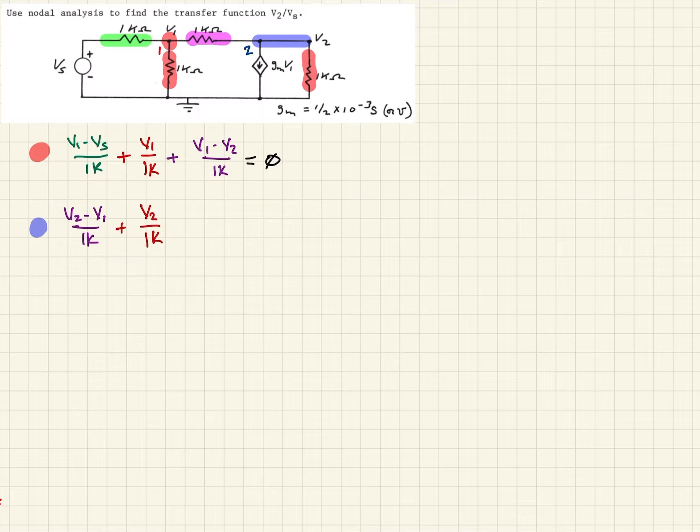Finally, we have a current source here that's a dependent current source. It's shown leaving the node, so we can just write that straight out. That's going to be plus GM V1. We should be able to set all those equal to zero.